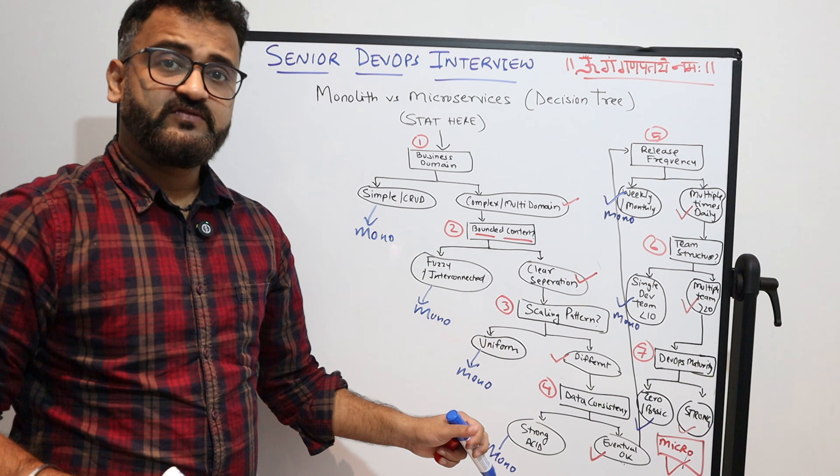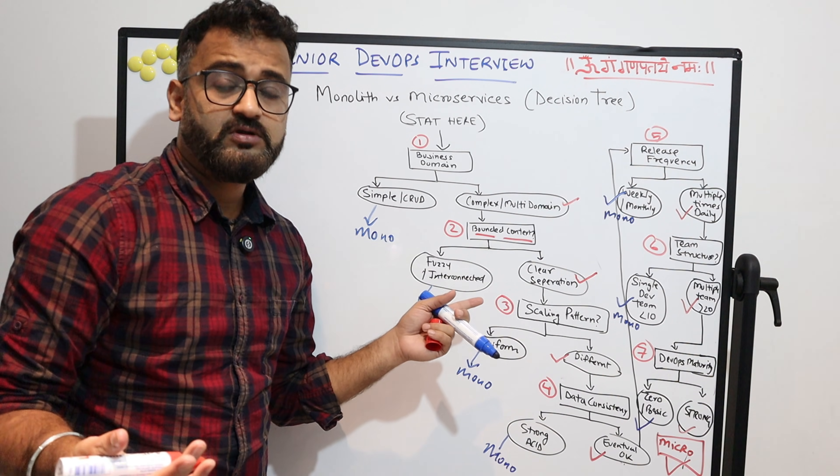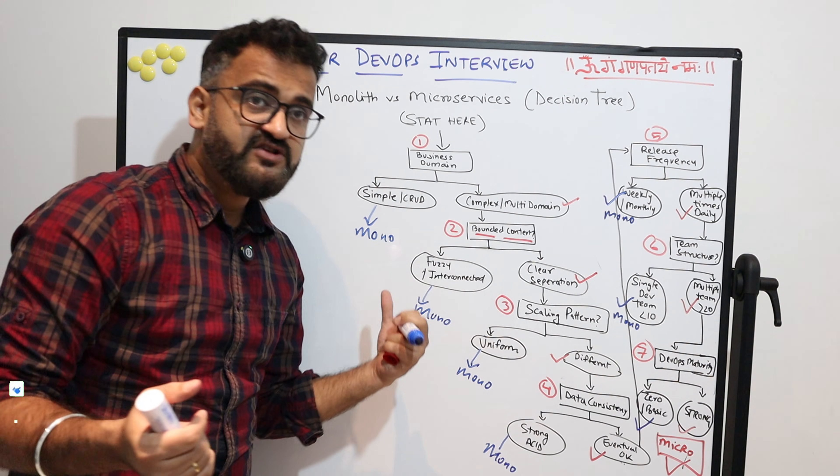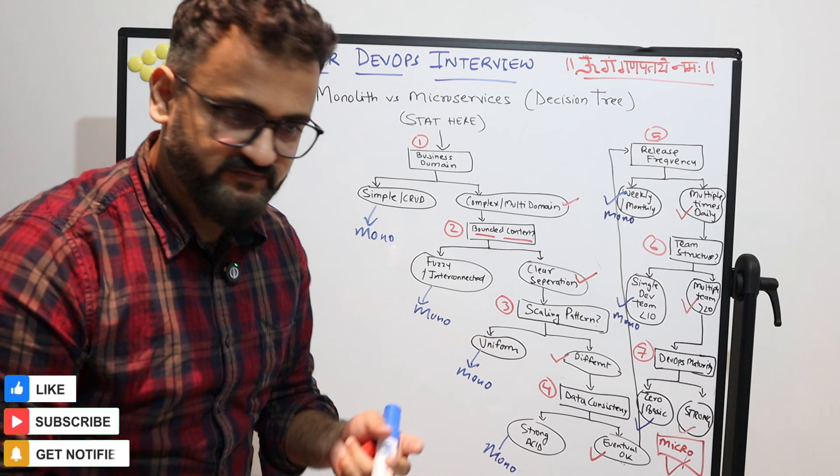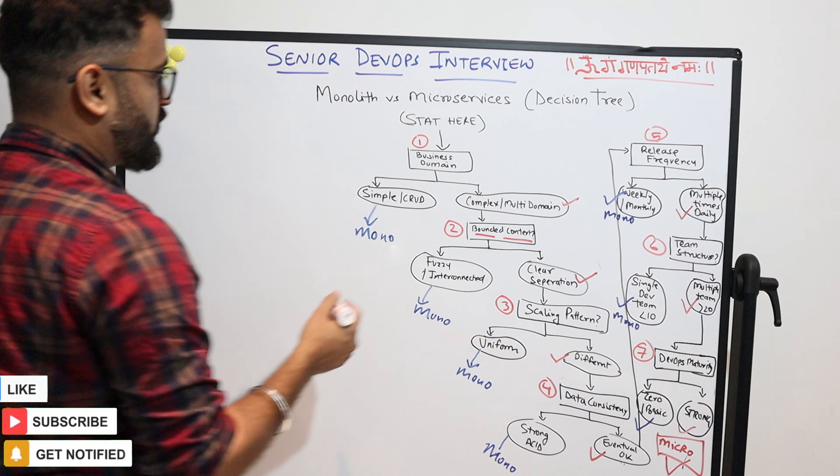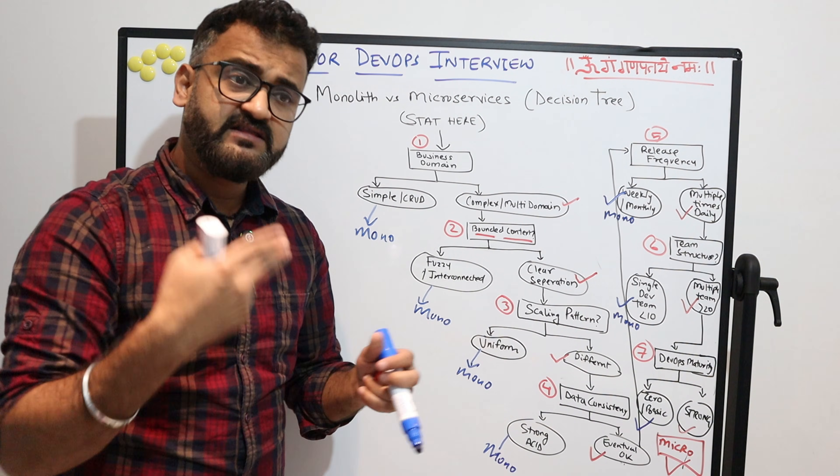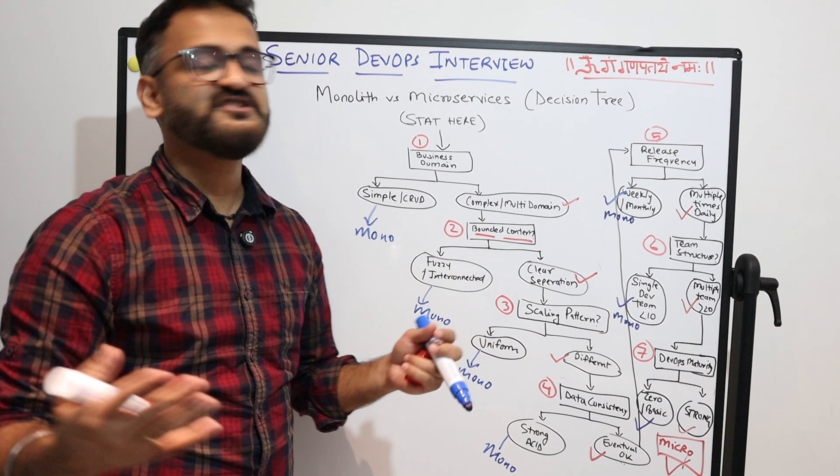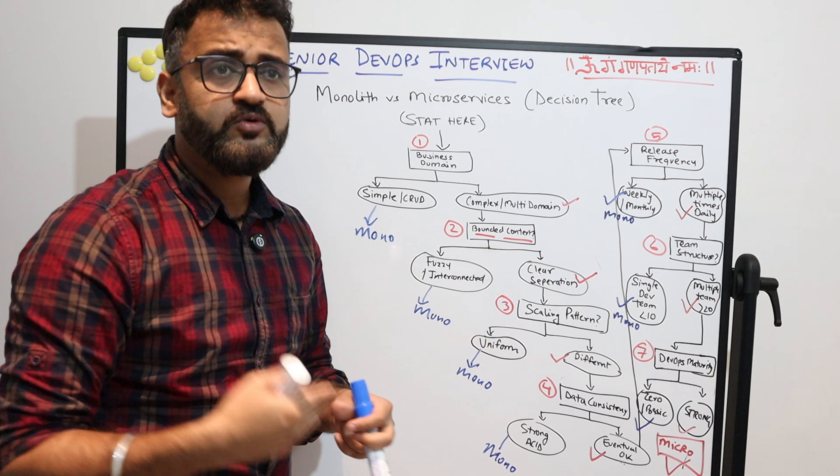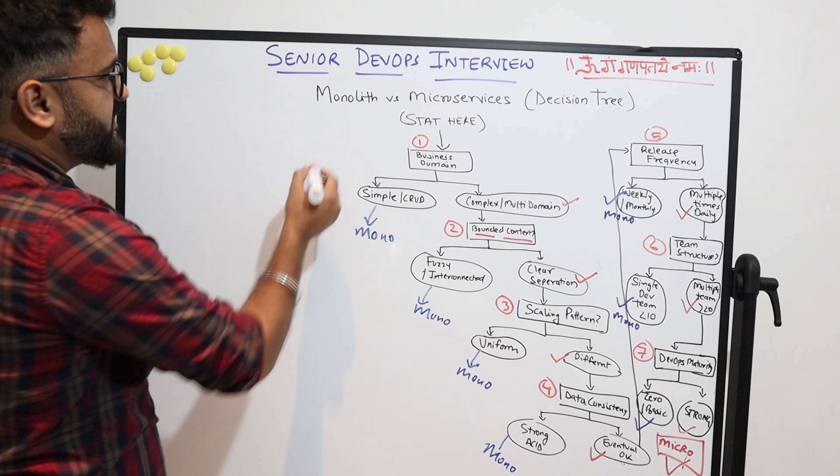And then there will be trade-offs. It is not a binary decision. There would be places where you think that okay, this leans towards monolith, but what can we do to make sure that we still go for microservices? The biggest—and which I have not added because there are so many—there are regulatory compliances, then there are decisions made on whether you will be on-prem or on cloud. So there are various decisions.